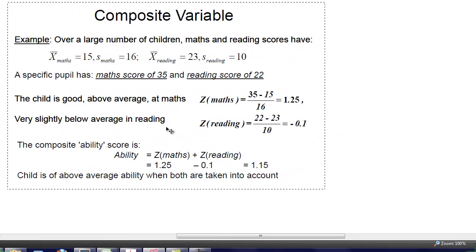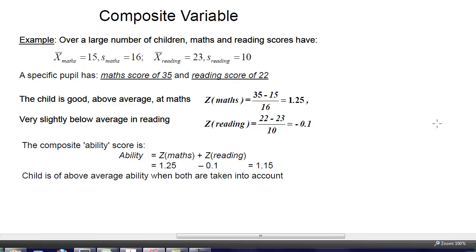In this example, what we want to know is the overall achievement of a child in school. We're going to restrict ourselves to measures of maths and reading. But we don't want to know how good is the child in maths or how good is it in reading. We want to know how good is it combined. We have a random variable x maths and another random variable x reading.